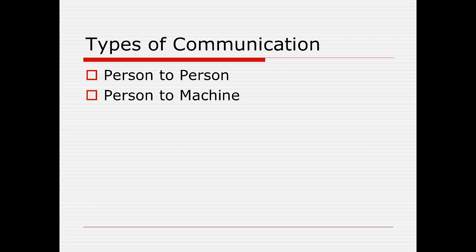People can communicate to machines. We communicate to computers by using the keyboard or speaking into a microphone. And if the information goes into the computer and is stored on a hard drive or on a network, then we have indeed transferred information from us to the machine.